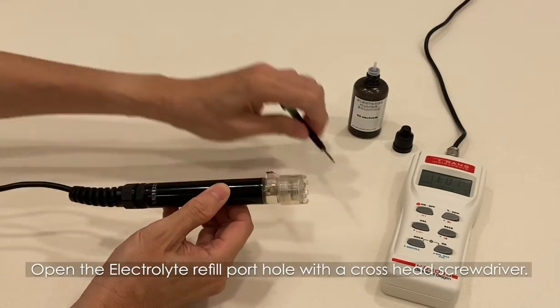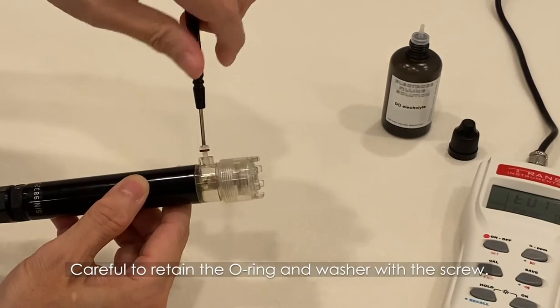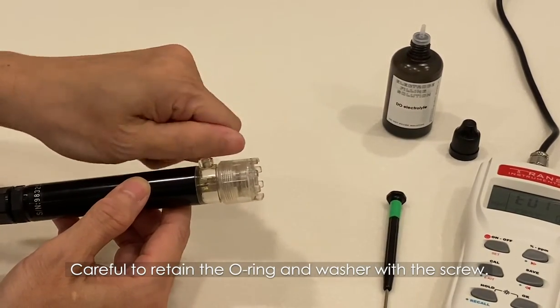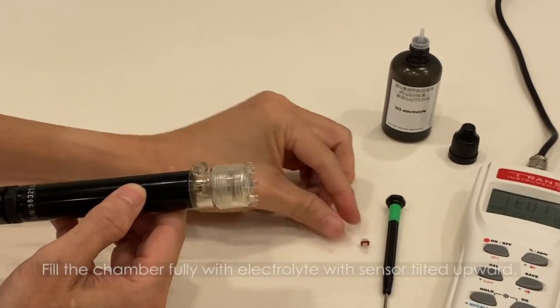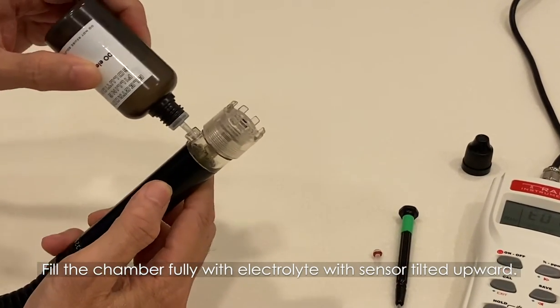Open the electrolyte refill pothole with a cross-head screwdriver. Be careful to retain the O-ring and washer with the screw. Now fill the chamber fully with electrolyte with sensor tilted upwards.